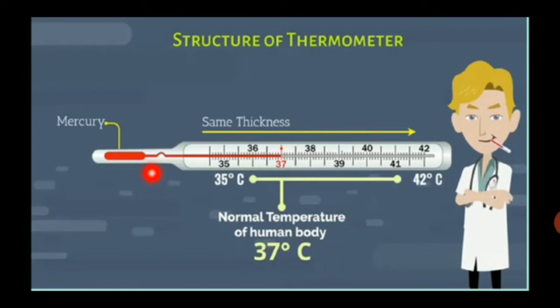For reading the temperature, there is a scale printed on thermometer. The normal temperature of human body is 37 degrees Celsius. However, it can vary between 35 degrees Celsius to 42 degrees Celsius.